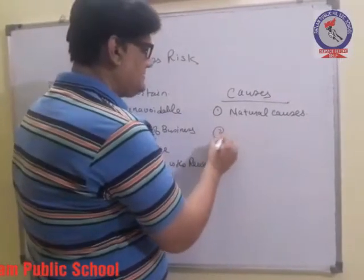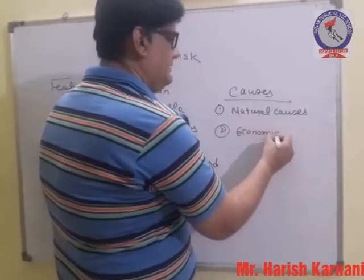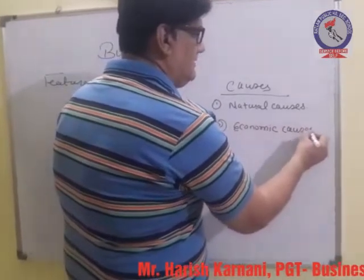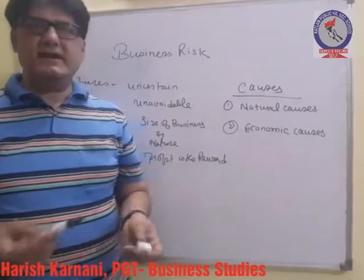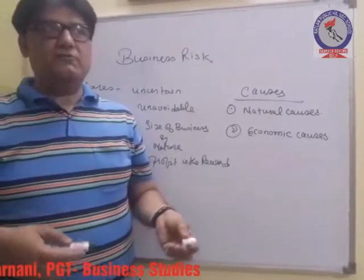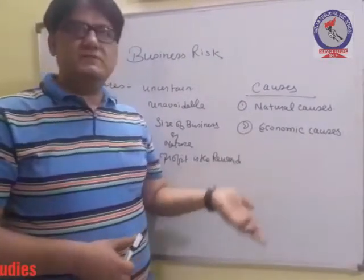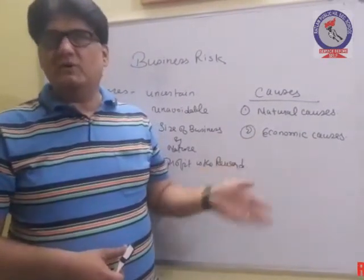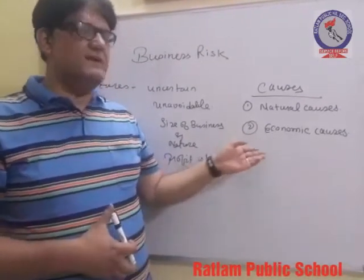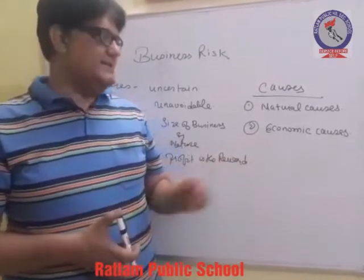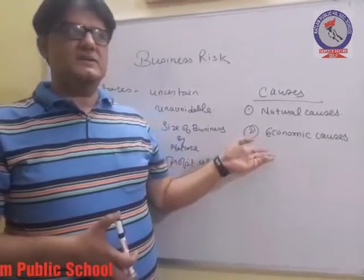The second cause is economic causes. In this, the businessman also does not have any control. Changes in demand, taste, fashion, fluctuations in the price level, and changes in government policies are related to these. Due to all these events, a loss is incurred by the businessman. So these are some of the economic causes which are reasons for business risk.